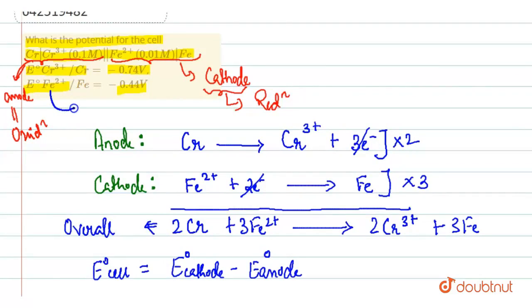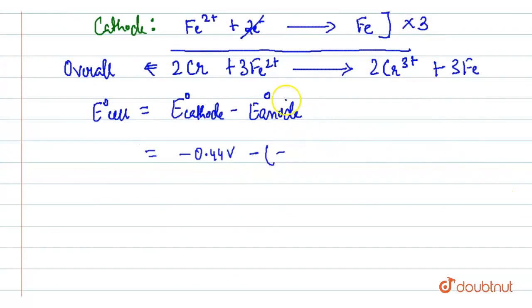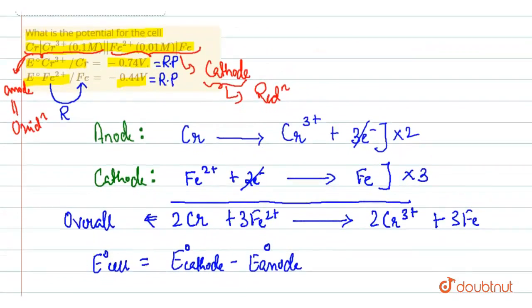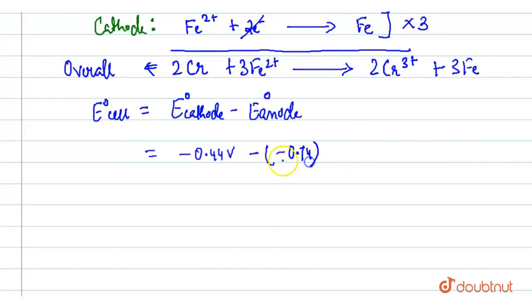From Fe2+ by gaining 2 electrons, it is converted into Fe. That means, decrease in oxidation state is nothing but reduction. So, this is your reduction potential. And here you can see, Chromium 3+ to Chromium. This is also the reduction potential. By convention, we have taken the reduction potential of both cases. So, minus 0.44 volt plus 0.74 volt. When you solve it, you will get 0.30 volt. This is your E0 cell.